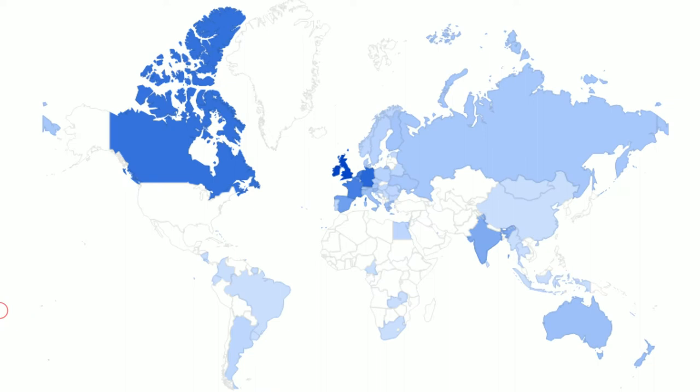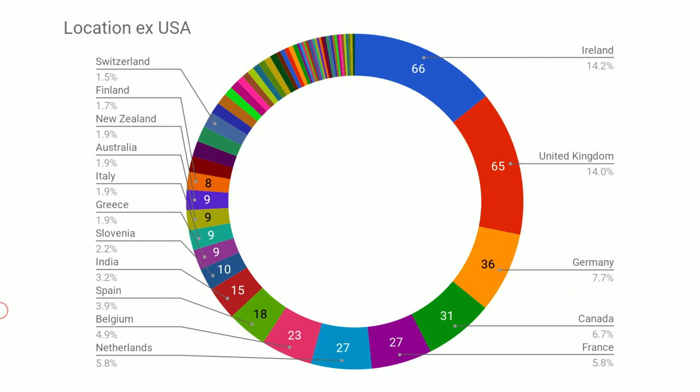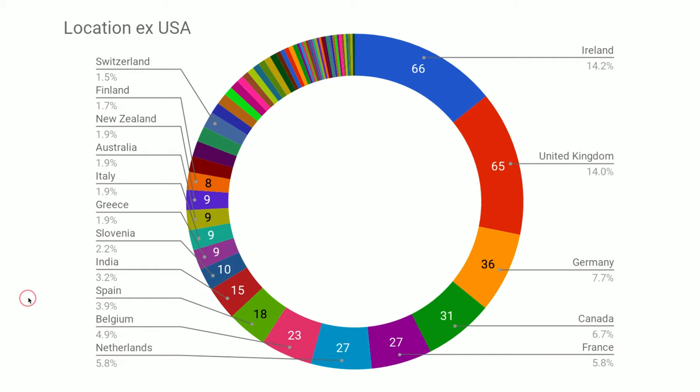Aside from the US — because otherwise the chart skew gets out of whack — you can see where we're getting survey results from. A pretty decent scattering around, and that's only in two weeks. Without the US, the top ten are not surprisingly English-speaking countries: Ireland and the United Kingdom, followed by the most populated European countries and Canada.